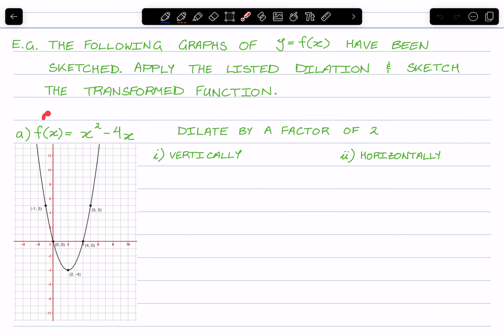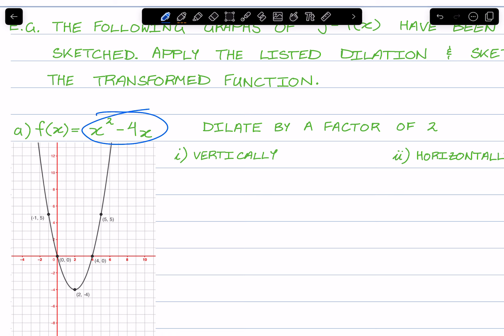So for these, I've given a function and the graph. We're going to dilate them vertically and horizontally. To do this, once again, always work with a factored form. So this will become x times x minus 4.